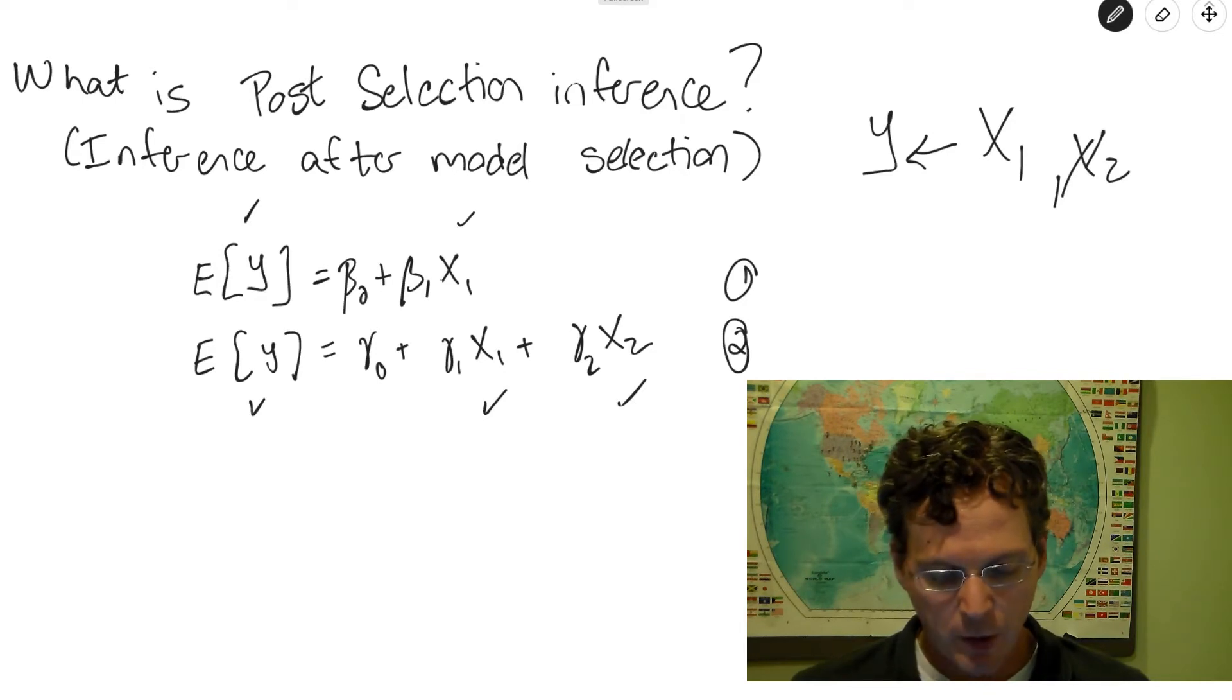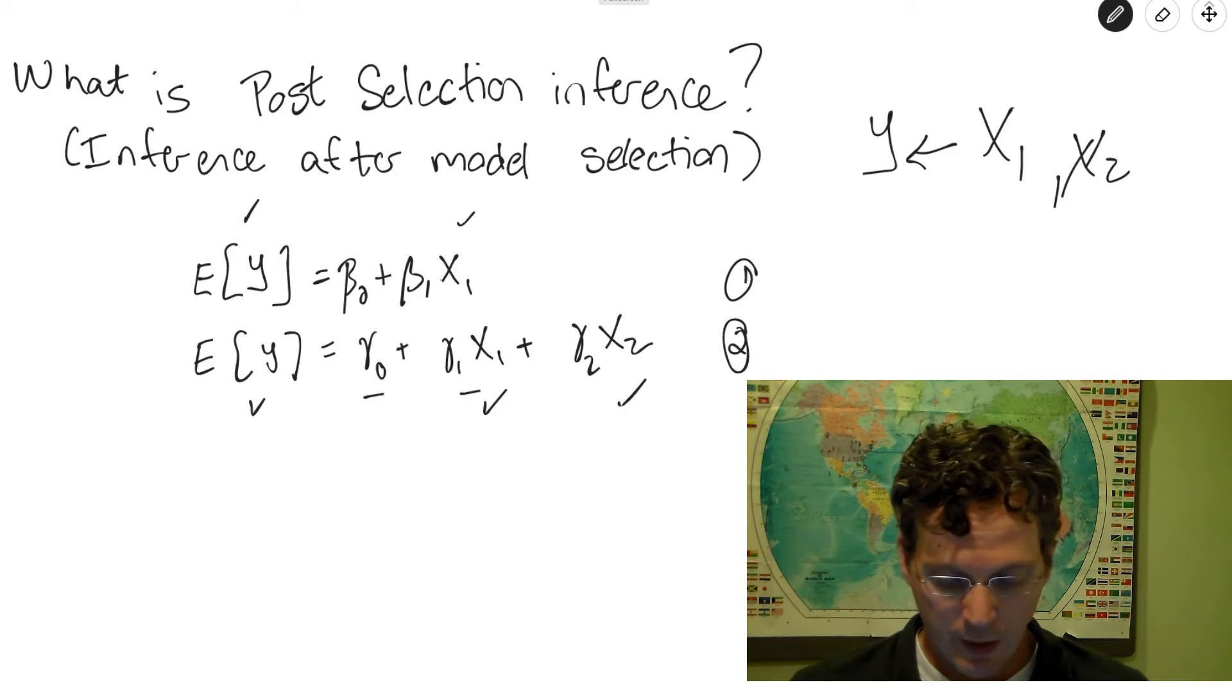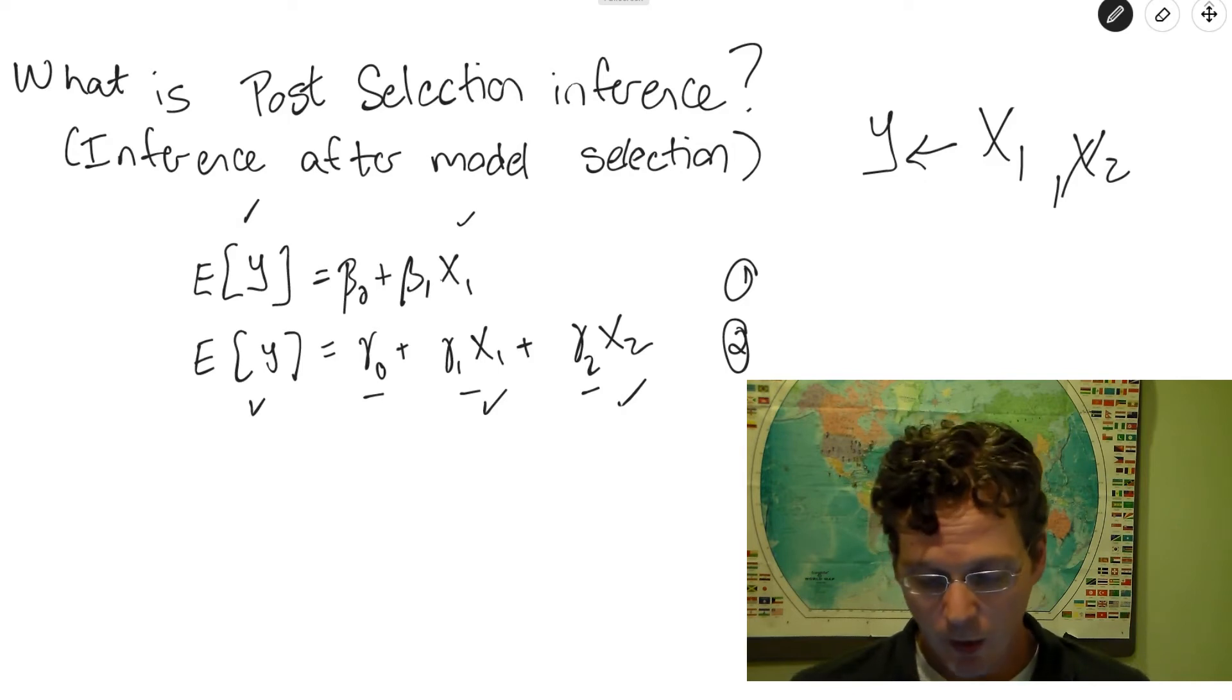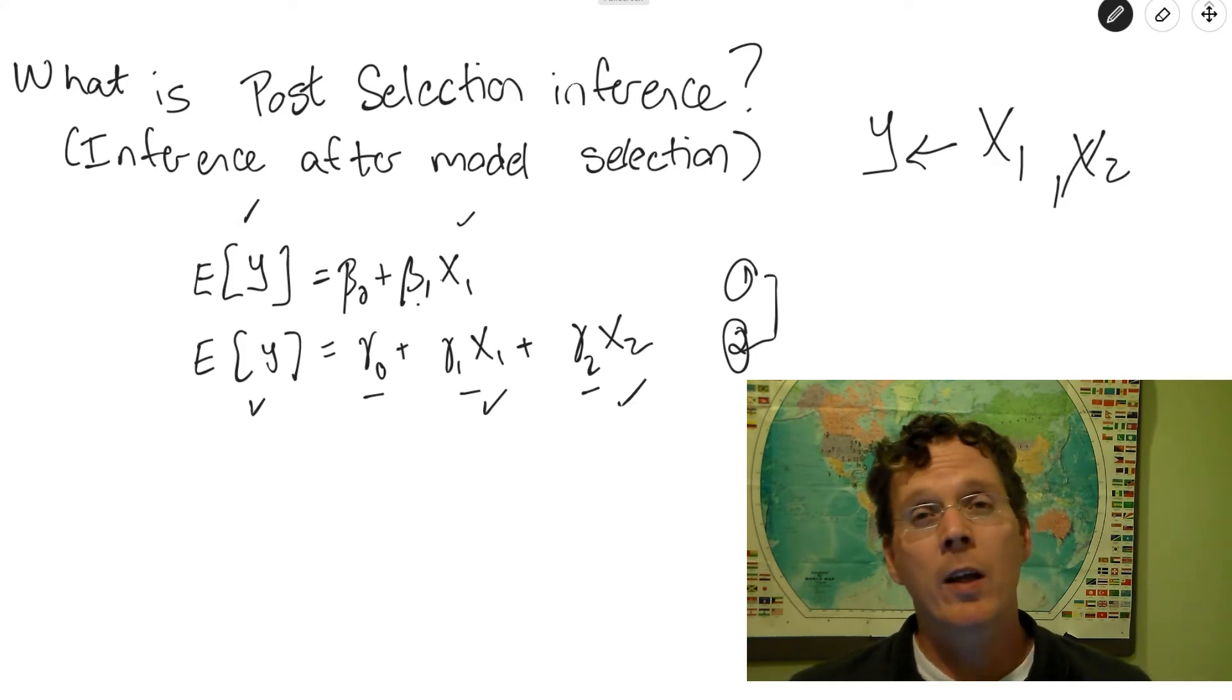Okay, and so I've actually put different parameters, beta 0 and beta 1, versus gamma 1 and gamma 2. I've done that because they're interpreted differently, and I want to emphasize that these are two different models. So if you actually first have some model selection procedure between model 1 and model 2, and then whichever one you select, look at the coefficient in front of X1 and compare its p-value to 0.05, the type 1 error rate may not wind up being 5% for that procedure.